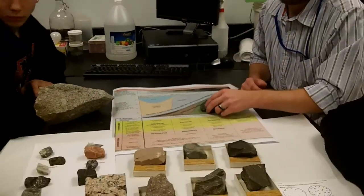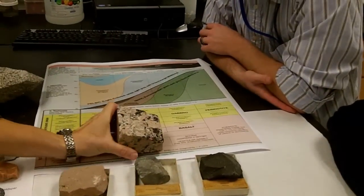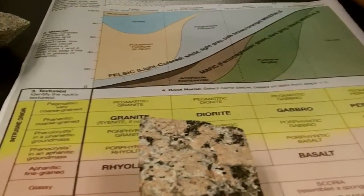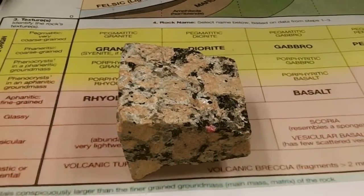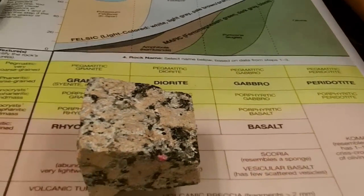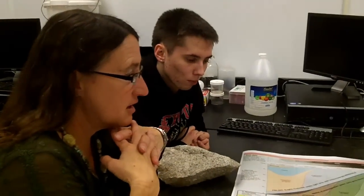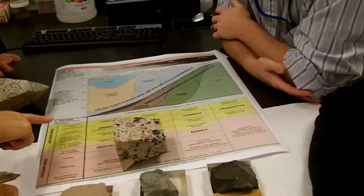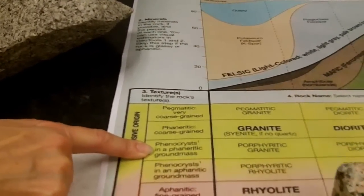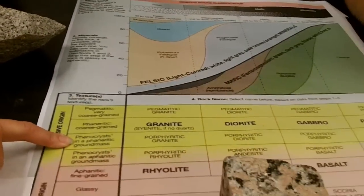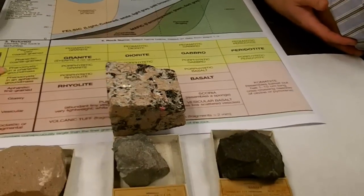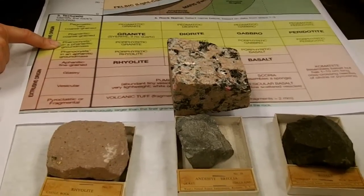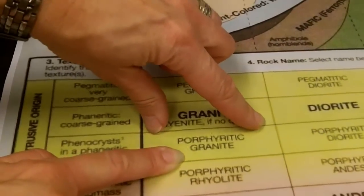Miss Awad is going to challenge them with a tough one. Texture — are the crystals big enough to identify without a microscope? Yes. Are the crystals all the same size? No. So if they're big enough to identify, it's phaneritic, and if they aren't all the same size, it's porphyritic. So it's porphyritic phaneritic — phenocrysts in a phaneritic ground mass. What minerals do you see? Feldspar, quartz. So what is this rock called? Porphyritic granite. Perfect.